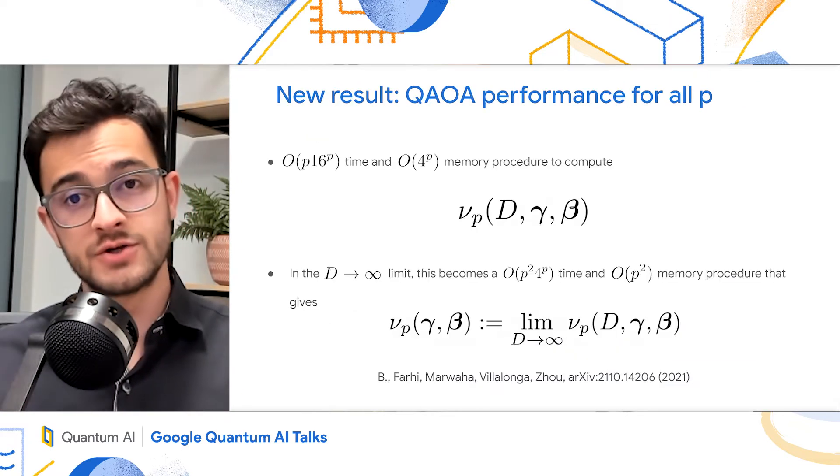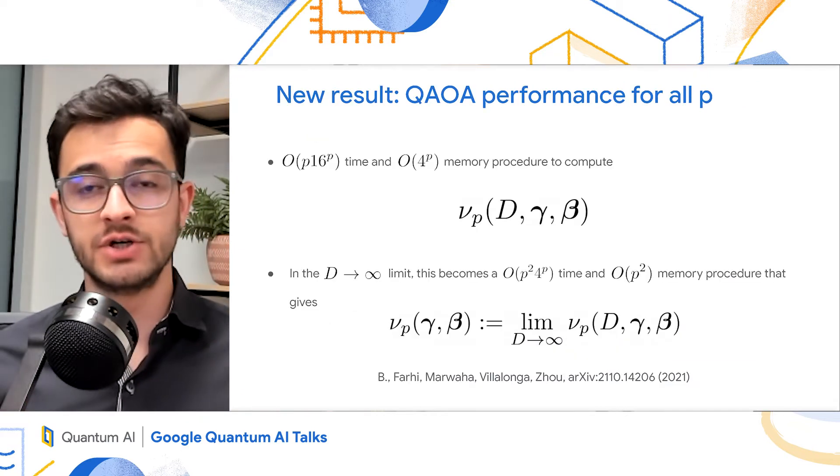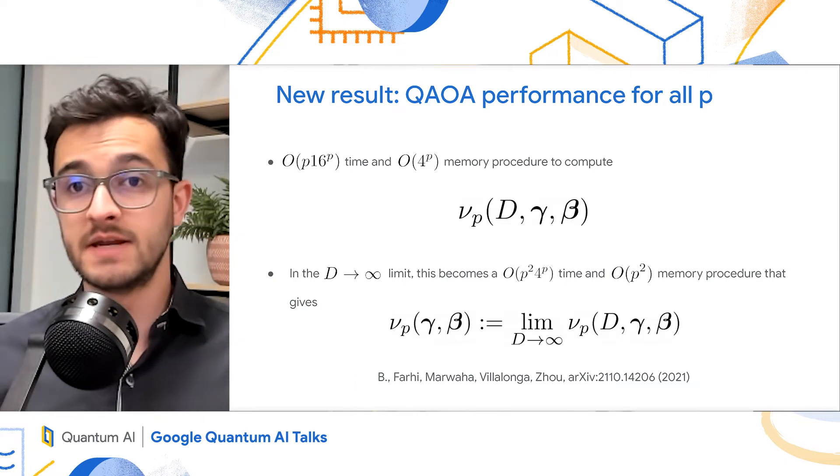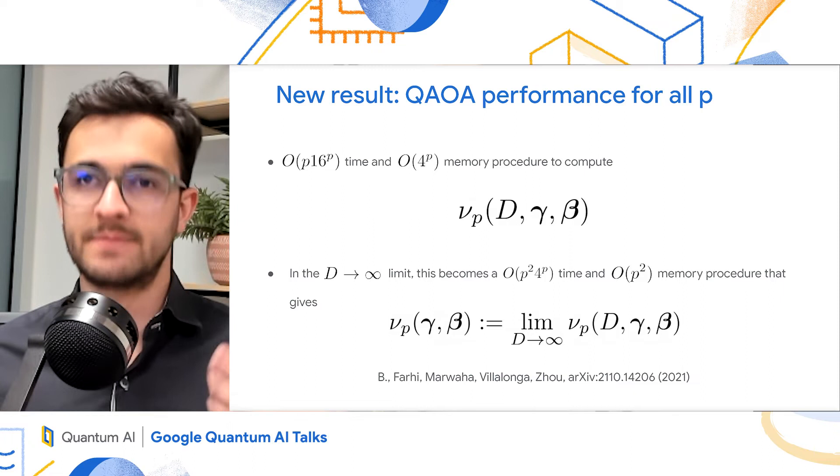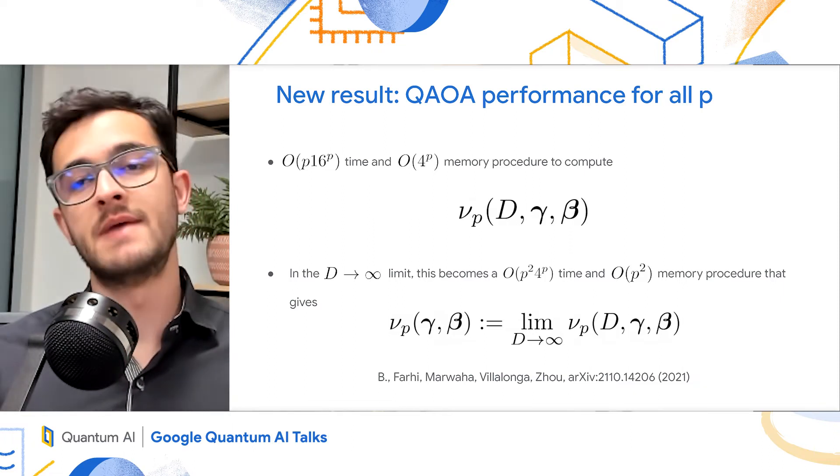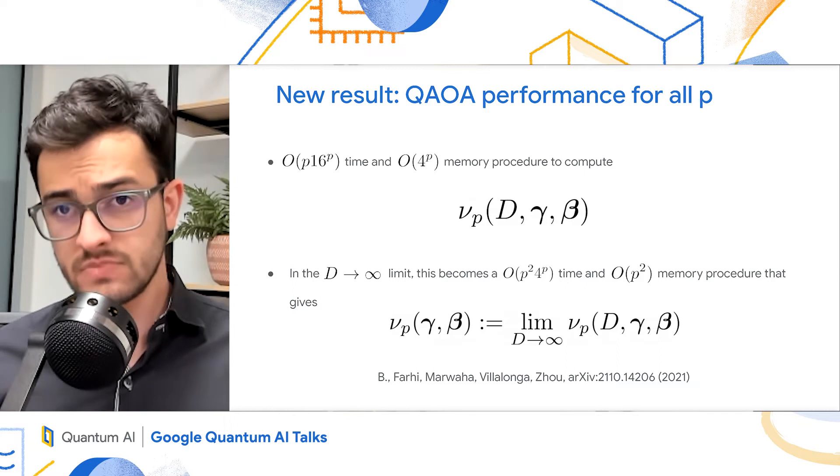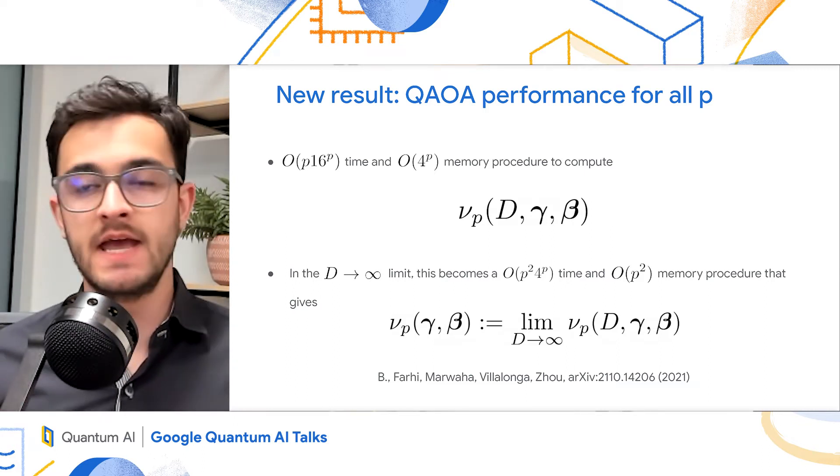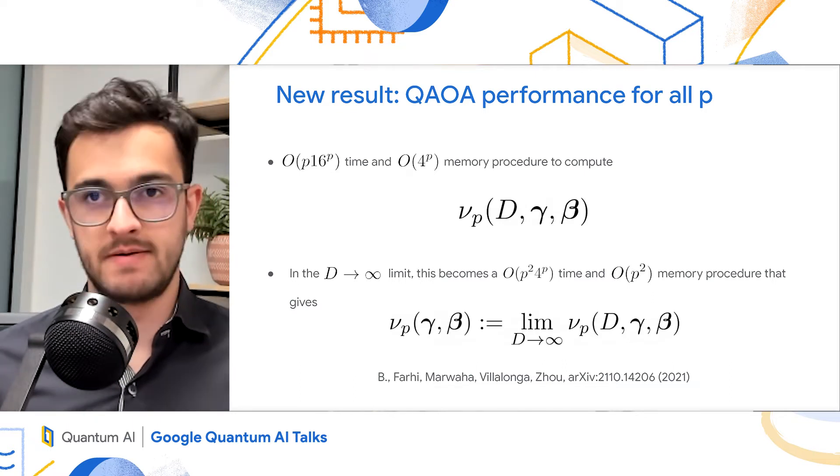One of our main contributions was to provide a computational procedure that takes in p, d, the gammas and the betas, and outputs this nu_p, the performance of the QAOA. It takes time p times 16 to the p, and memory, 4 to the p. In the d to infinity limit, this procedure becomes much simpler. And it takes time p squared, 4 to the p, and p squared in memory.